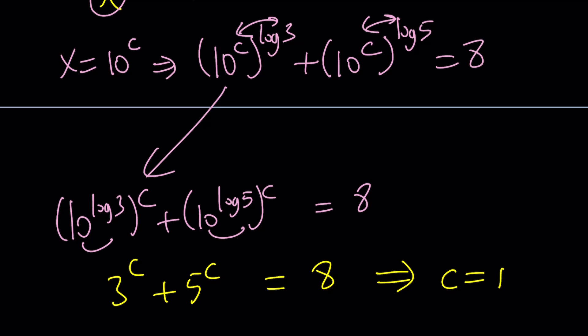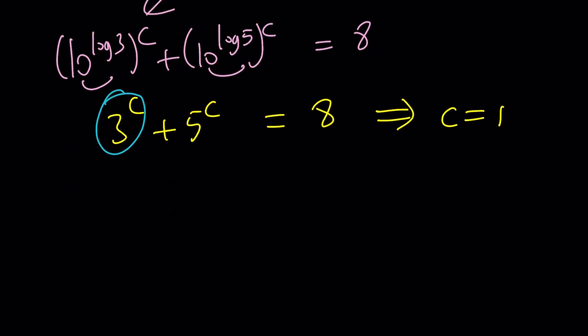We could also do the following. You can write this as 10 to the power c log 3. Let me just do one of them. The other one is similar. And then you can bring it back up here, 10 to the power log 3 to the c. And then using the 10 to the power log, they're just going to cancel out. Because this is log with base 10, and this is base 10. They are inverse functions. They cancel out, leaving us with 3 to the power c, just like this one.